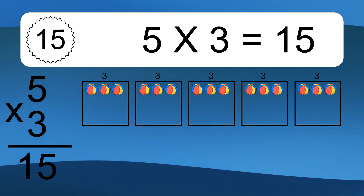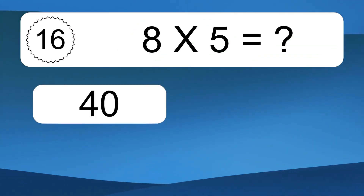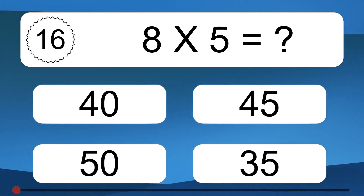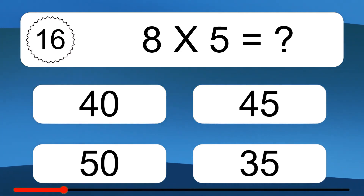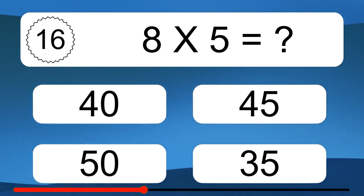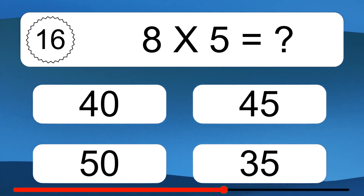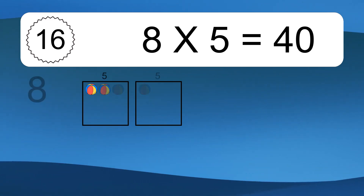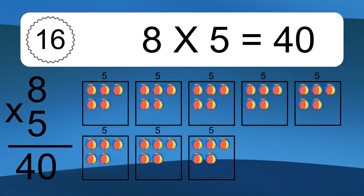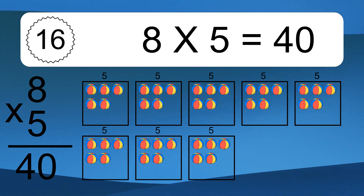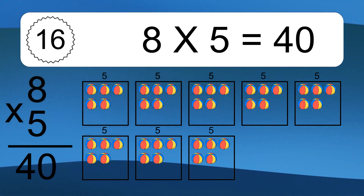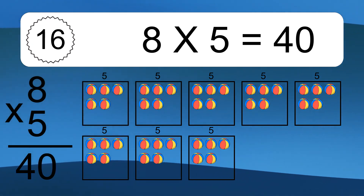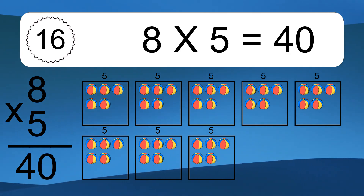This equals 15 balls. 8 times 5 equals what? 8 times 5 equals 40. We have 8 boxes, and each box has 5 colorful balls inside. If you count all the balls in all the boxes together, you will have 8 times 5 balls.